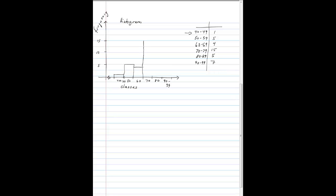From 80 to 89, I have 5. And lastly, I have 7 scores between 90 and 99. And that's my histogram.